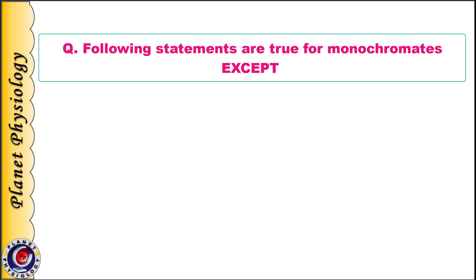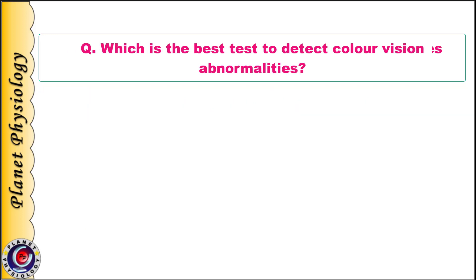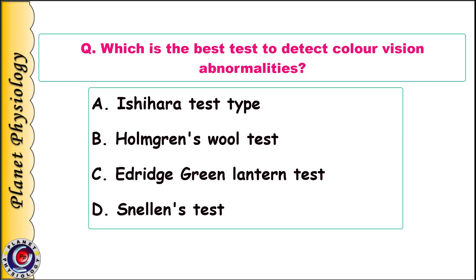Next question: Following statements are true for monochromates except — A. They have only red cones; B. Their usual spectrum is very narrow; C. They see only shades of grey; D. It is a very rare condition. And the last question: Which is the best test to detect color vision abnormalities? A. Ishihara test type; B. Holmgren's wool test; C. Edridge Green Lantern test; D. Snellen's test.